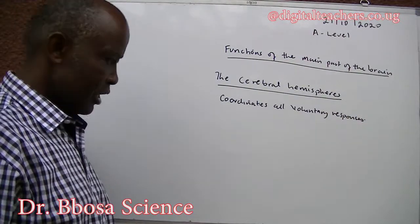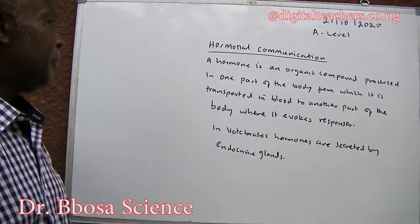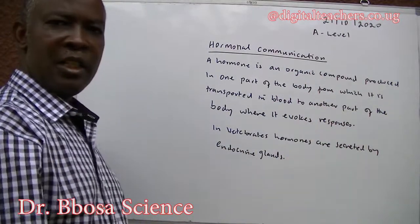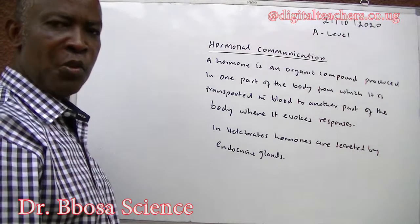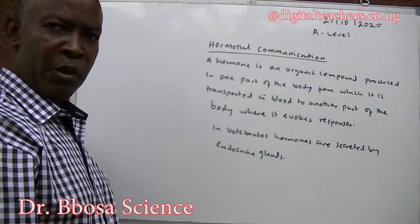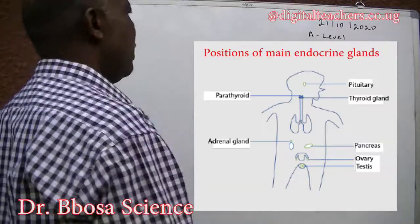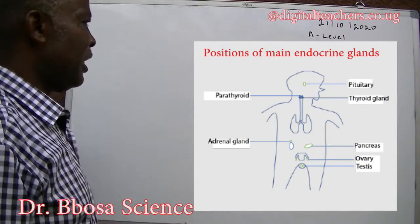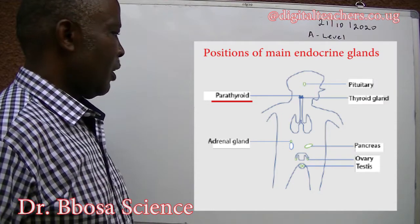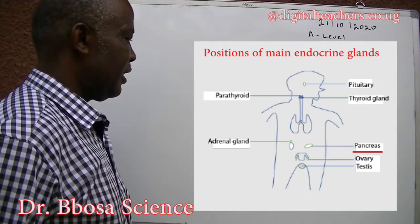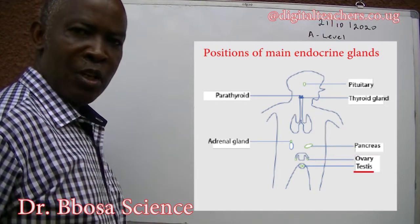The cerebral hemispheres coordinate all voluntary responses. A hormone is an organic compound produced in one part of the body from which it is transported to another part of the body, usually through the blood, where it evokes responses. In vertebrates, hormones are secreted by endocrine glands. The endocrine glands in the human body include the pituitary gland in the head, the thyroid and parathyroid glands in the chest, and in the abdomen we have the pancreas, the ovaries, the adrenal glands above the kidneys, and the testes.